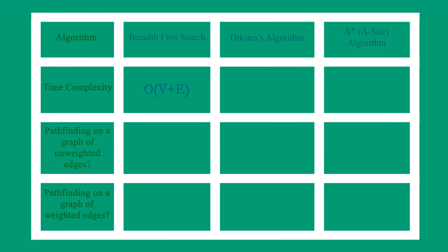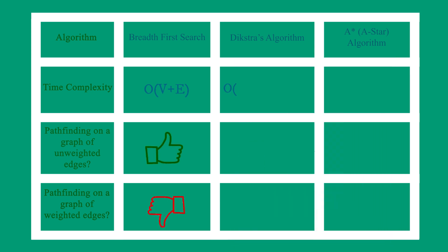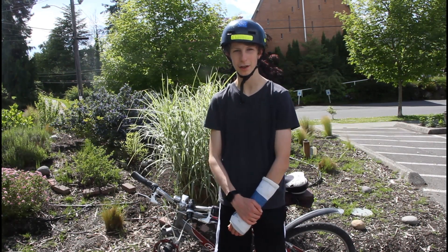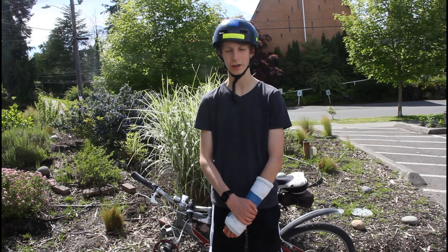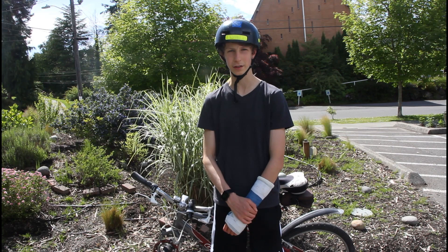In my opinion, the breadth-first search algorithm is good for finding the path of the least amount of nodes on a graph of unweighted edges, such as Pac-Man. Dijkstra's algorithm is good for finding the path of least distance on a graph of weighted edges, like navigating a map. However, A-star does this more efficiently. Pathfinding has so many current applications, from video games, navigation apps, and even to real-world self-driving cars. Search algorithms use math and computer science to help us get where we're going more efficiently.